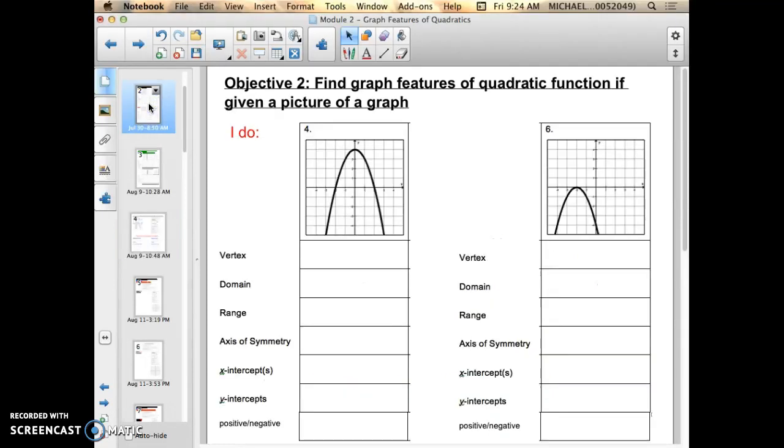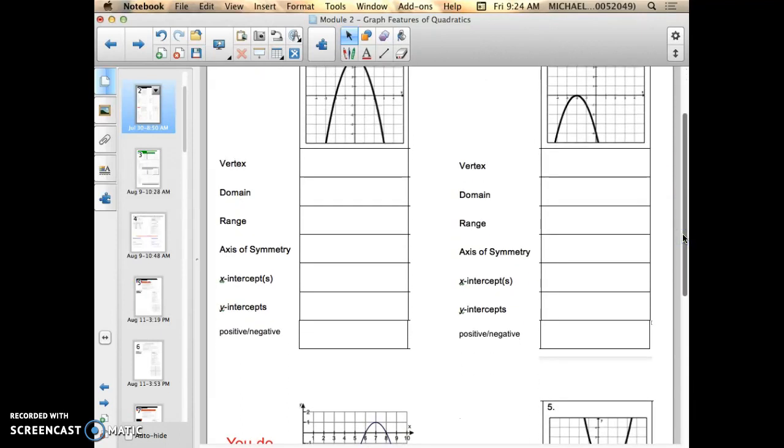When you were given a picture of the graph, you went through and found the vertex all the way through the domain, range, x-intercept, y-intercept, and positive or negative. So all those graph features you found off of a picture,